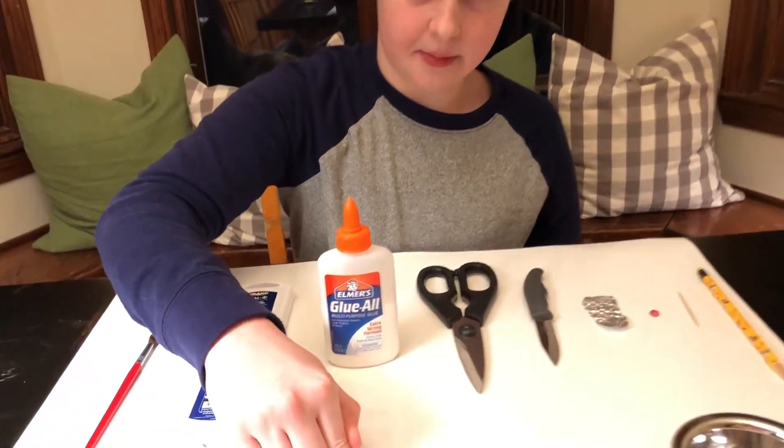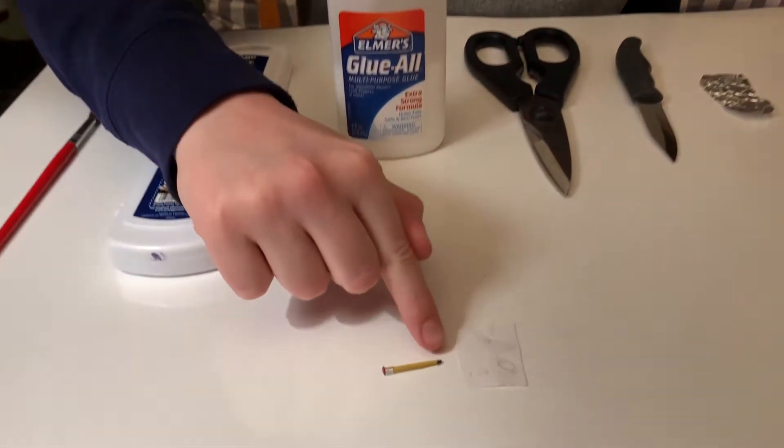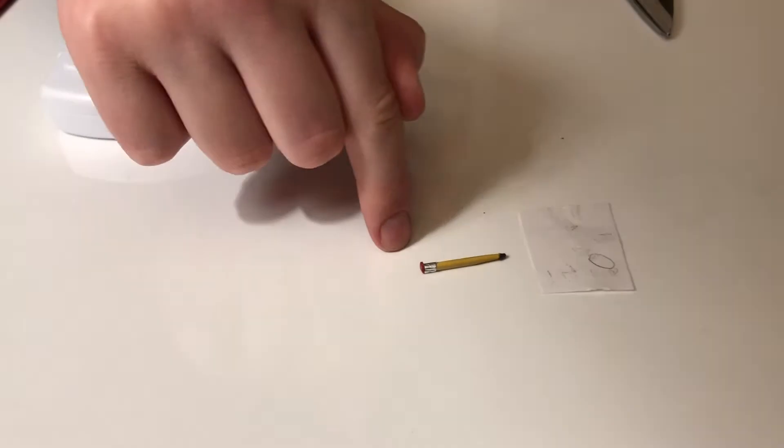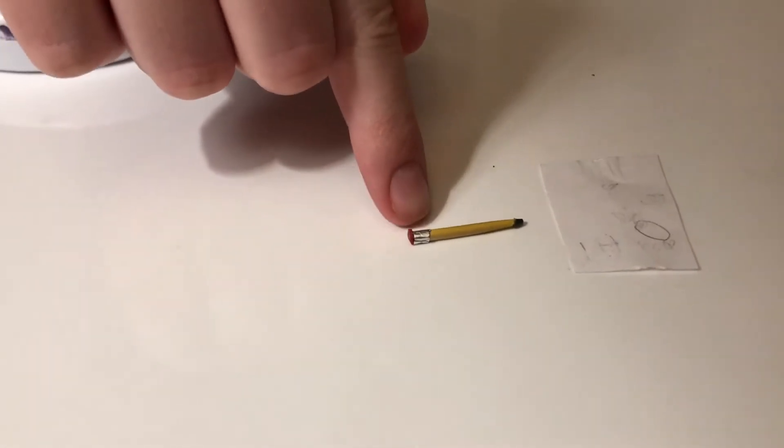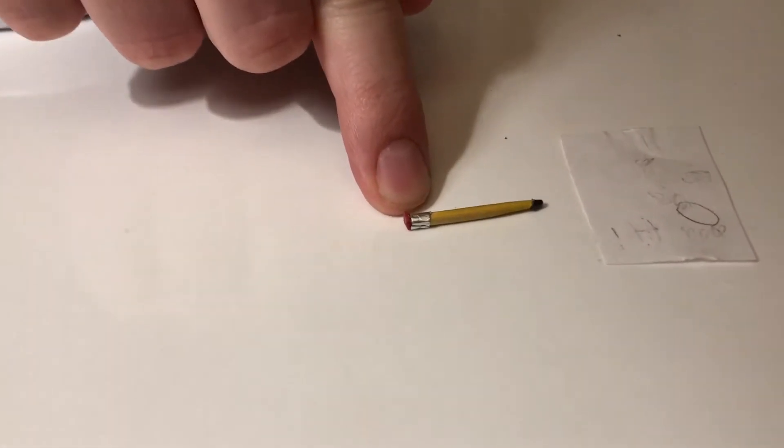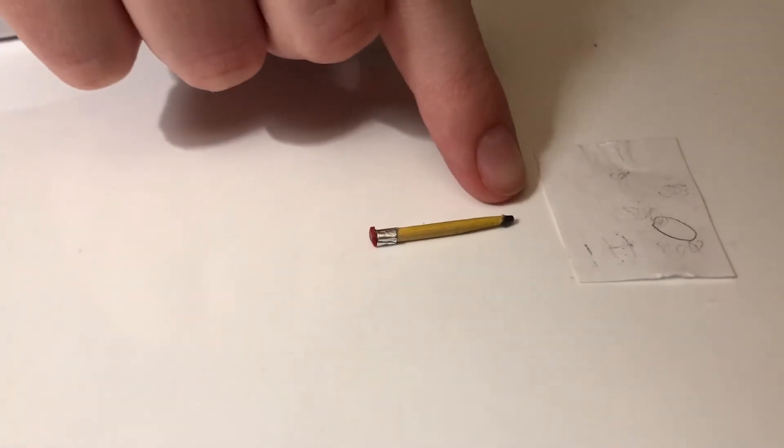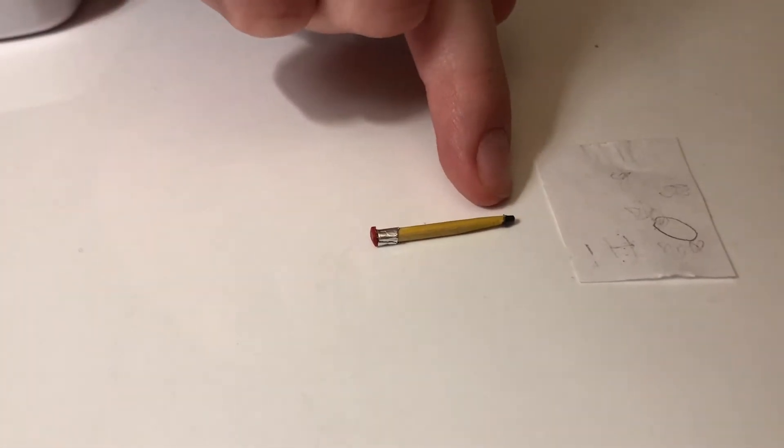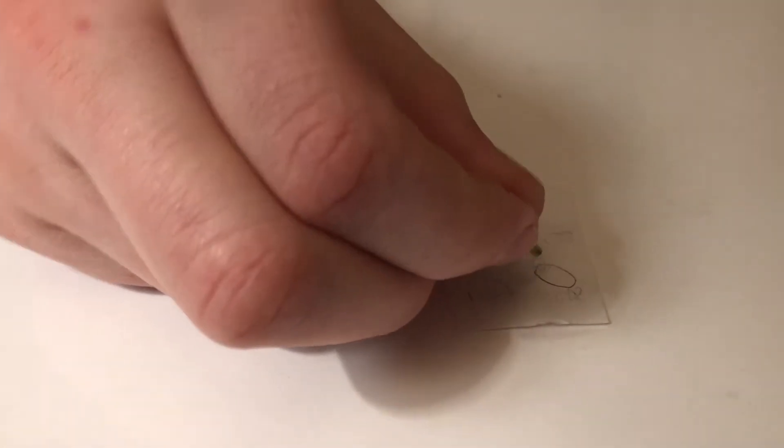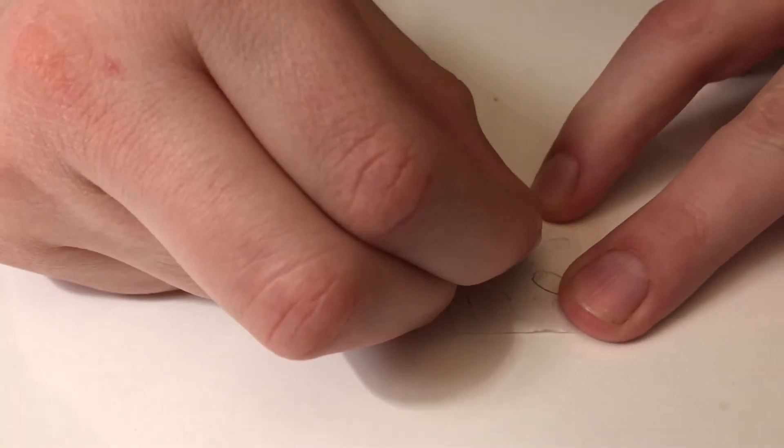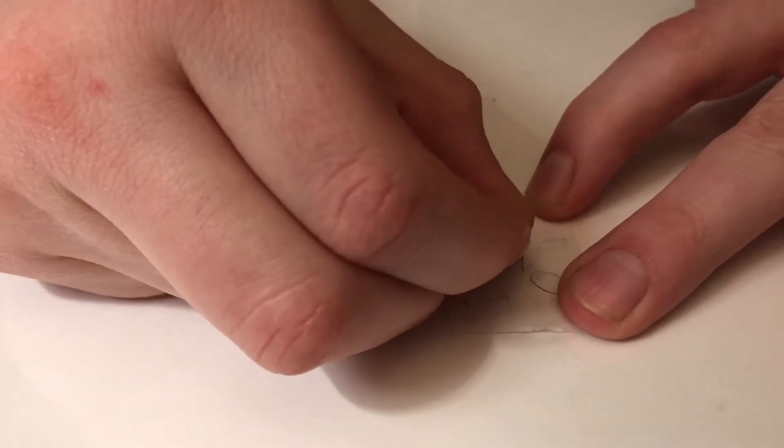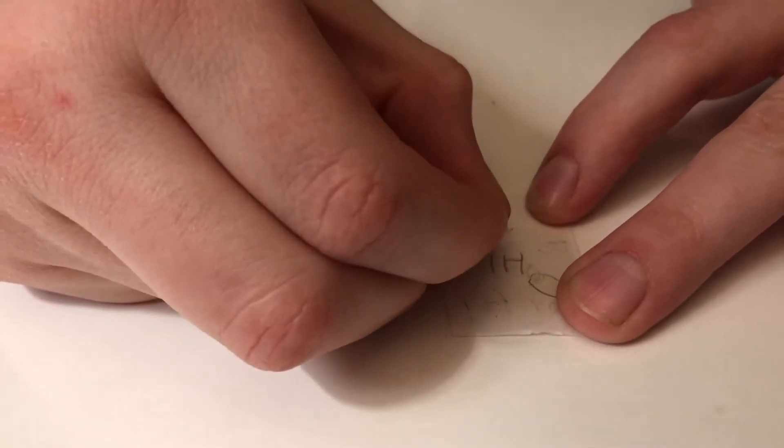So here is the miniature pencil when you are done making it. Here's the eraser and the little metal part that attaches to the eraser, the wood body, and the lead on the end. You can actually write and erase with this.